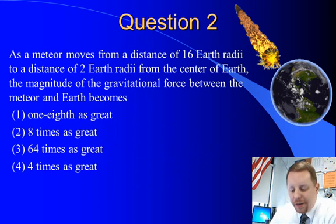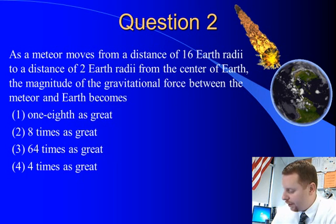Question two says, as a meteor moves from a distance of 16 Earth radii to a distance of 2 Earth radii from the center of Earth, the magnitude of the gravitational force between the meteor and Earth becomes, and our choices are one-eighth as great, 8 times as great, 64 times as great, or 4 times as great.